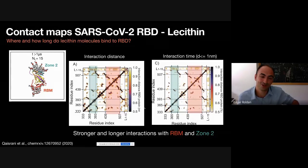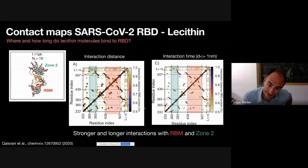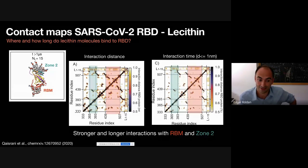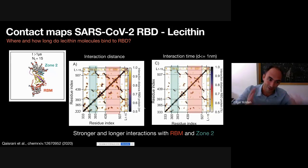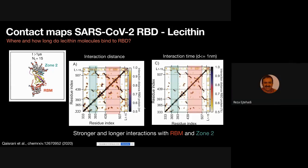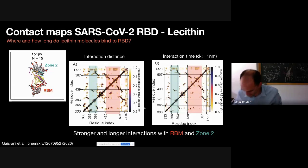One could use lecithin as a carrier — for example, a nanoparticle with ACE2 that joins with the virus and brings the lecithin — which others have used in recent COVID therapy. By now, we are in the ideal world with only water, the spike, and lecithin. That is a great suggestion, thank you.